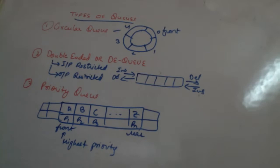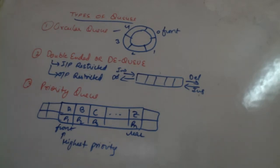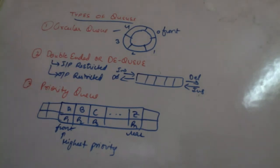A queue works on the principle of first in first out, so insertion always happens at the rear end and deletion always happens from the front end. We have already covered insertion and deletion, and queues can be implemented as arrays or linked lists. There are three kinds of queues depending on the application they are going to be used for.